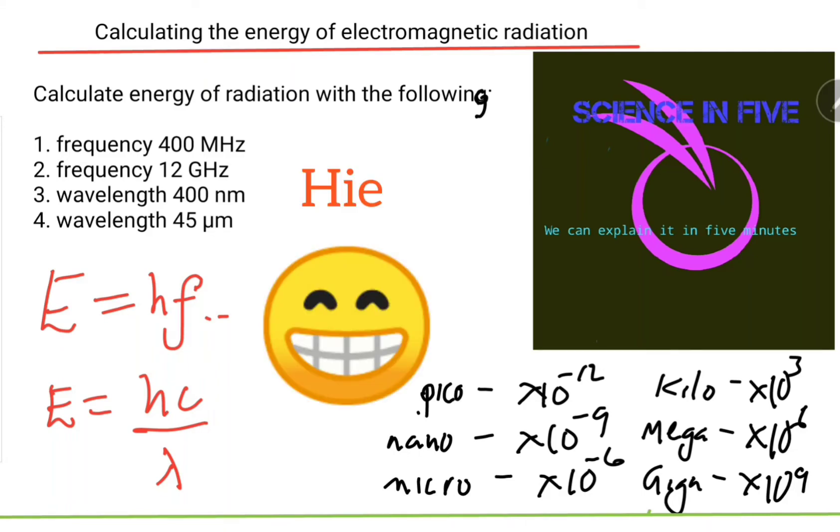Hi guys, welcome to Science in Five. I can explain it in five minutes. I'm going to show you how to calculate the energy of electromagnetic radiation using two equations: E equals h times f, and E equals hc divided by lambda.